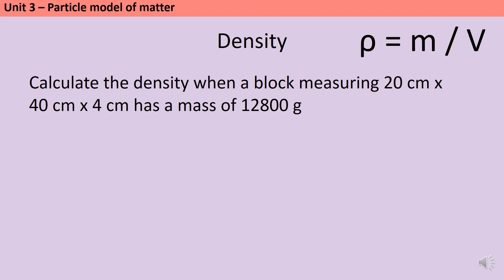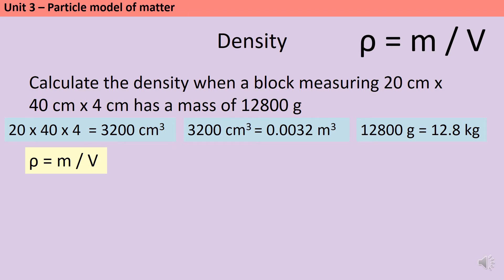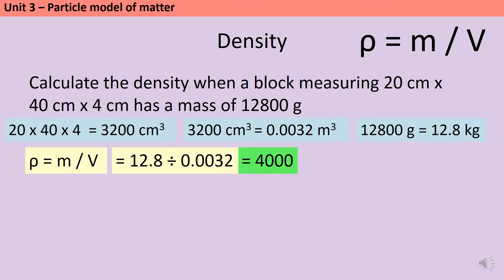Here's a worked example. Say I want to calculate the density of a block that measures 20 by 40 by 4 centimeters and has a mass of 12,800 grams. Firstly I need to calculate the volume by multiplying together all of the sides, which gives a volume of 3,200 centimeters cubed. I convert this to meters cubed by dividing by one million. I also convert the mass in grams to kilograms by dividing by a thousand. Density is mass divided by volume: 12.8 kilograms divided by 0.0032 meters cubed gives a density of 4,000 kilograms per meter cubed.